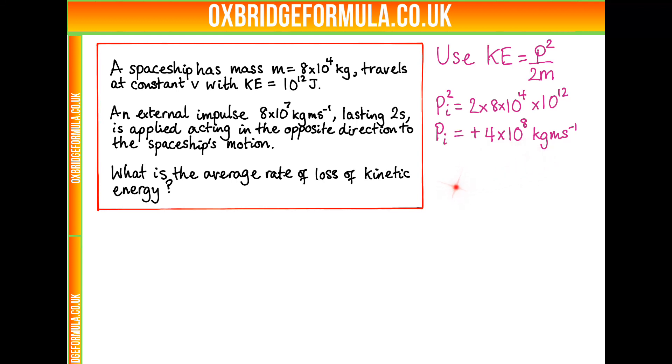So how can we get the final momentum so that we can put it into the new kinetic energy? Well, the final momentum is the initial momentum, take away the impulse, minus that, because it's in the opposite direction. So we then get 3.2 times 10 to the 8. Well, you could have written this as 32 times 10 to the 7, for kilograms meters per second.